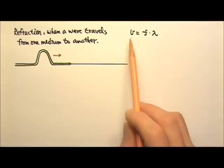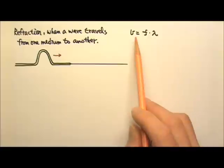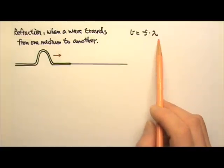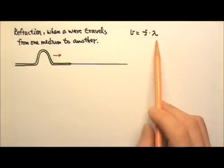When a wave refracts, one of these three things—speed, frequency, and wavelength—does not change. Which one does not change?